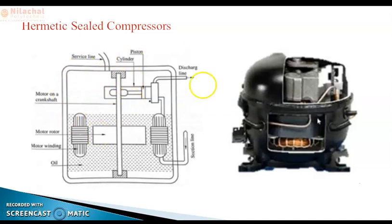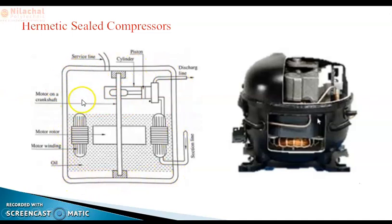The two units — the motor (prime mover unit) and the compressor unit — are enclosed in a closed casing, resulting in a very compact size of compressor. Now observe the different parts of the Hermetic Seal Compressor.